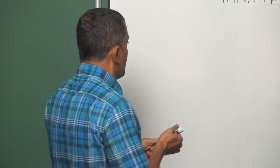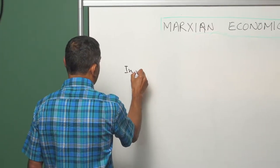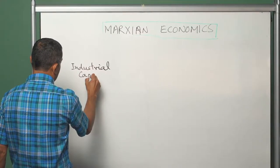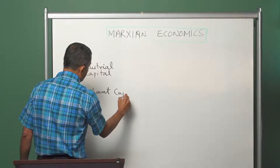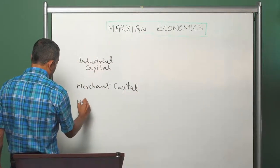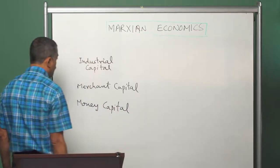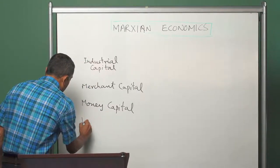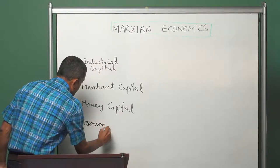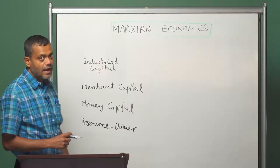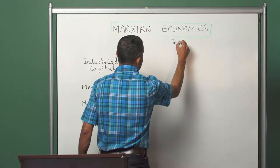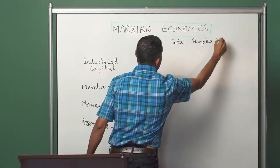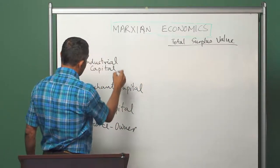We might summarize the main argument in Volume 3 as follows. On one side we have the names of different fragments of capital. The first fragment is industrial capital. The second fragment is merchant capital. The third fragment is money capital. And the fourth fragment of the ruling class is not a capitalist but a resource owner — a resource owner like a landowner, who in feudal times was a landlord or even in early capitalism was a capitalist landlord. On the other side, we see how the total surplus value generated gets distributed — starting with the industrial capitalist.